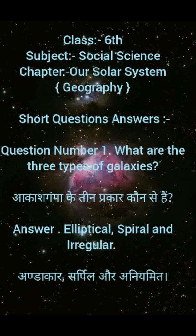Question No. 1: What are the three types of galaxies? Aakash Ganga ke teen prakaar kaun se hain? Answer: Elliptical, Spiral and Irregular. Andakar, Sarpil aur Aniamit.